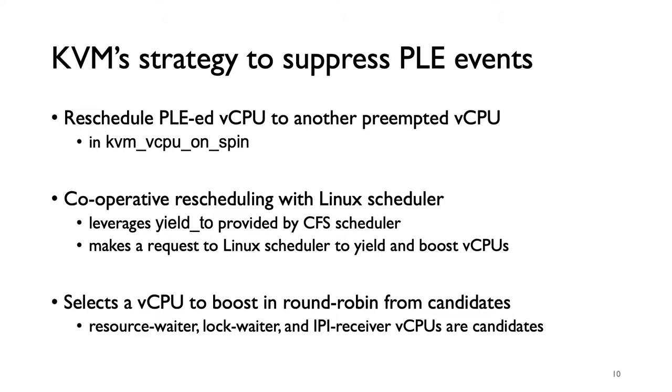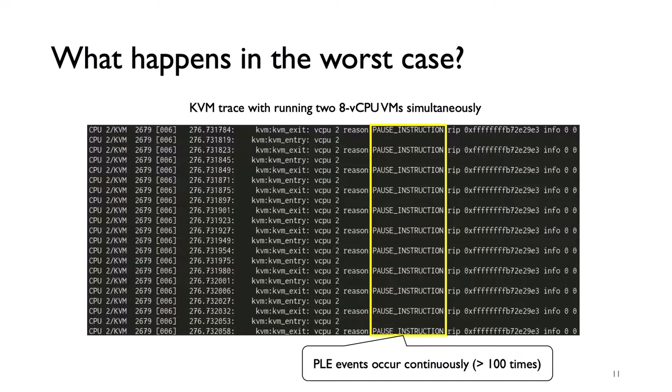To yield and boost vCPUs, KVM makes a request to the Linux scheduler. Before making a request, KVM selects a vCPU to boost in round-robin from candidate vCPUs. This candidate selection is important to resolve the cause of PLE as soon as possible. Also, KVM attempts to reschedule vCPUs where a PLE event happens. In the worst case, a lot of PLE events occur in a short period of time. This is a KVM trace with two 8-vCPU VMs running simultaneously. VM exits occur repeatedly due to pause instructions, meaning PLE events occur continuously more than 100 times even though the VM has only 8 vCPUs and they are boosted in round-robin.